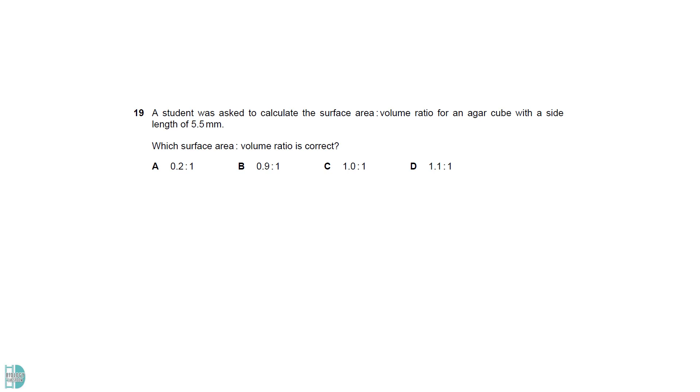The total surface area of a cube is 6 times the length of its side squared. Volume is length cubed. The ratio is 1.1 to 1.